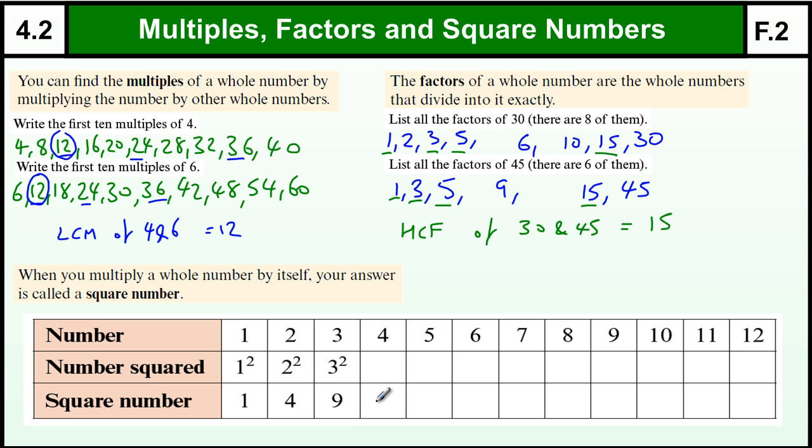Square numbers are numbers that you get from multiplying a particular number by itself, and they're written like this. 4 squared is 16, 4 times 4. 5 squared is 5 times 5, which is 25. 6 squared is 6 times 6, which is 36.